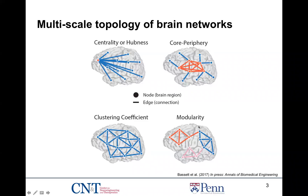Finally, we also consider the modularity of the network. Modularity tells you that particular nodes are performing functionally specialized computation — it's a compartmentalized view of computation in the brain. All of these topologies have been integrated to understand not only cognition, but more recently to understand a variety of brain network disorders.